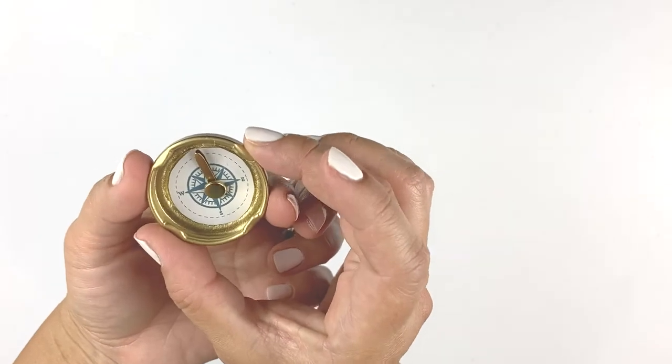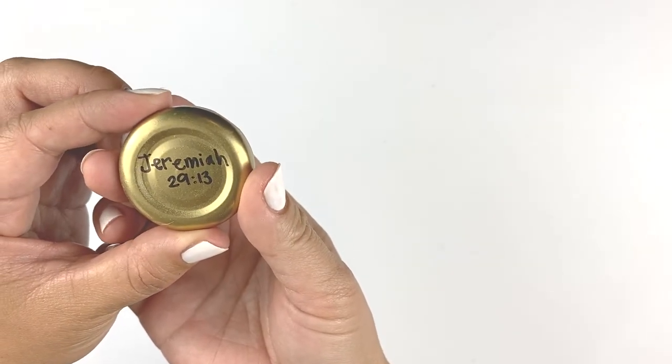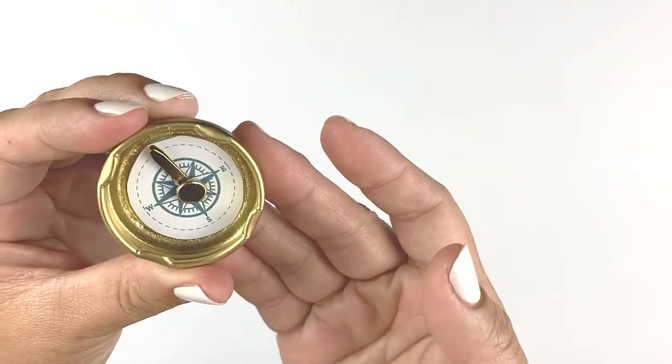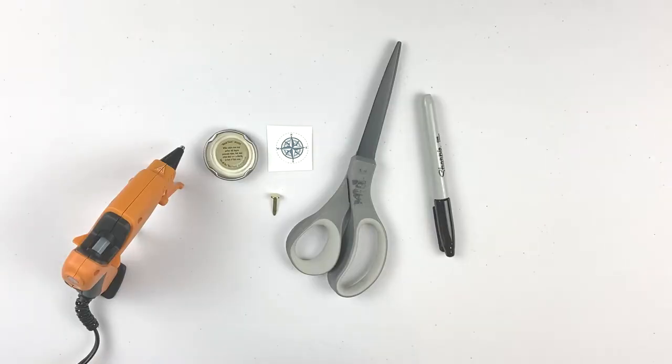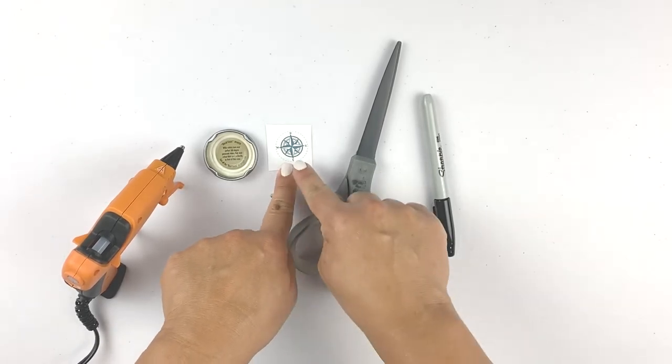Today we'll be making a compass, and on the back it says Jeremiah 29:13. For today's craft we're going to need the printout, and if you don't have a printout you can always just...